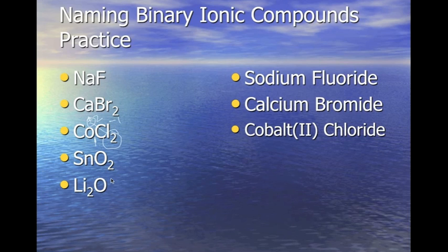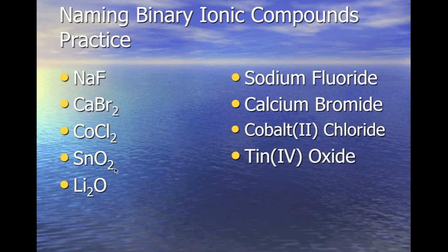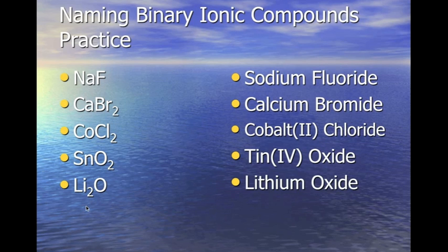Next, tin and oxygen: we have a subscript of 2 for oxygen, and oxygen's oxidation number is negative 2, with an implied 1 on tin. Since the numbers don't match up directly and have been reduced, this is tin(IV) oxide. Then lithium and oxygen: lithium is not a D-block metal, so it's just lithium, and oxygen becomes oxide — lithium oxide.